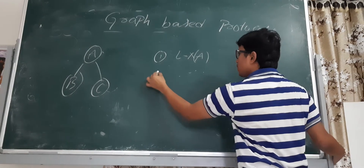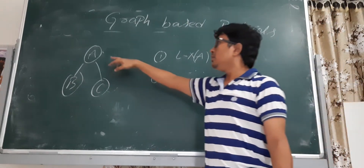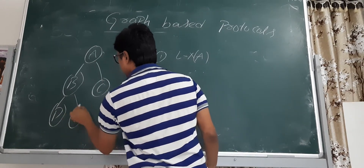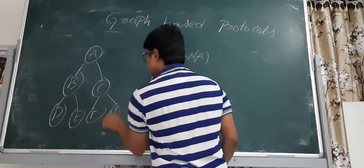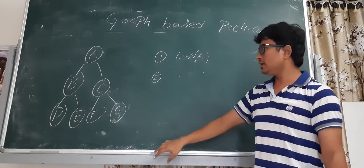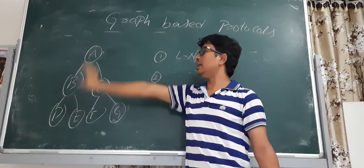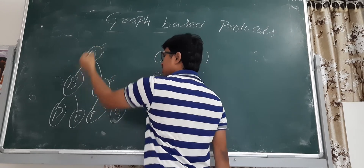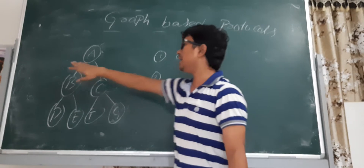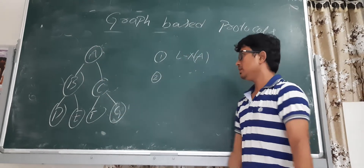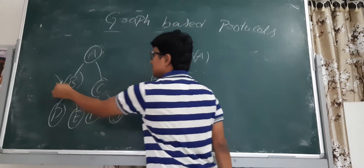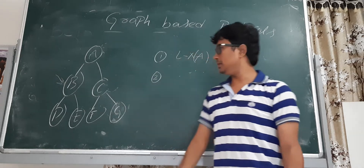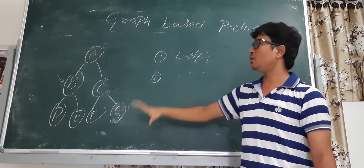The second point — please listen carefully. Suppose I have a tree with nodes D, E, F, G and so on. You can keep the first lock on any data item. I can keep the first lock here, or here, or anywhere — meaning I can lock any data item first. For example, I have locked on B because I can lock any data item first.